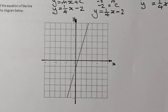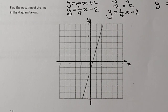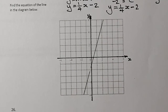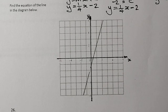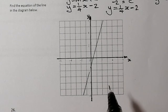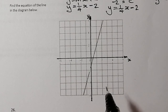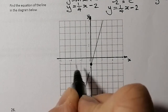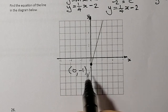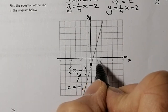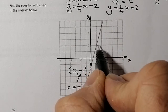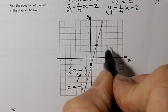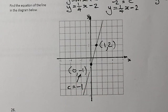Moving on to a similar question — the only difference is that we've got a diagram. Find the equation of the line in the diagram. I don't immediately have labelled points, but I can select a couple from the grid. I'll pick the point (0, -1), which tells me the c value is -1 right away, and another point at (1, 2) — that's 1 along and 2 up — as my two points.